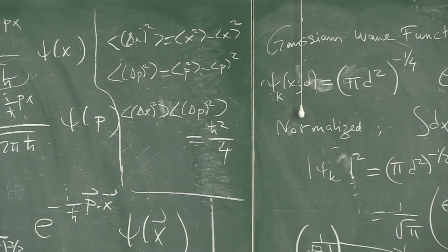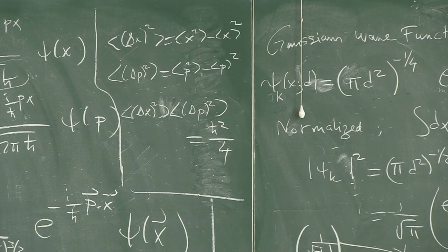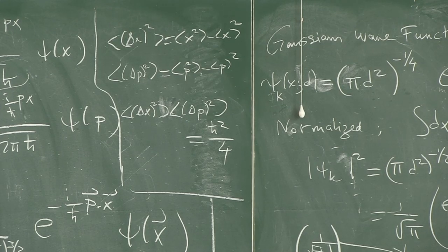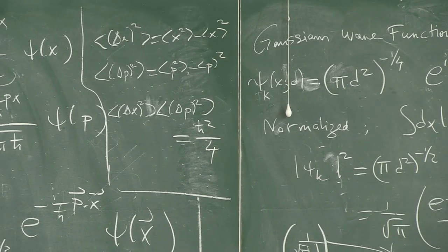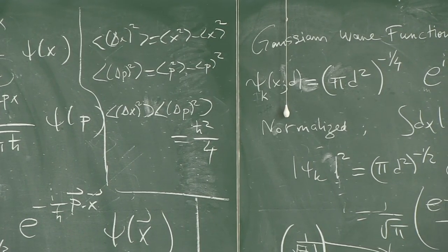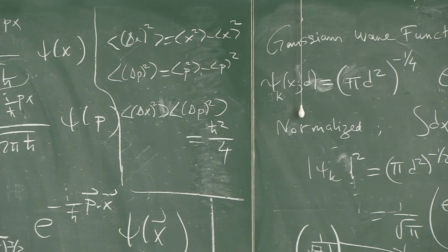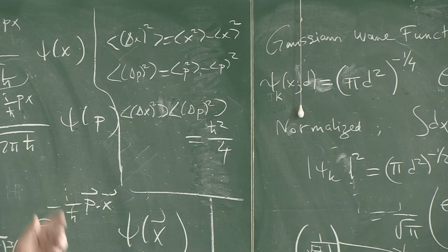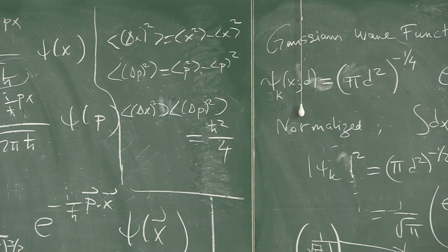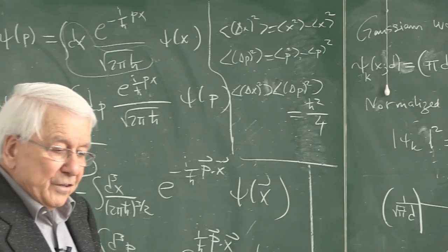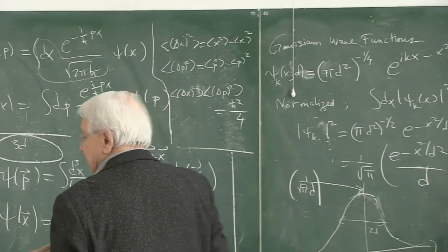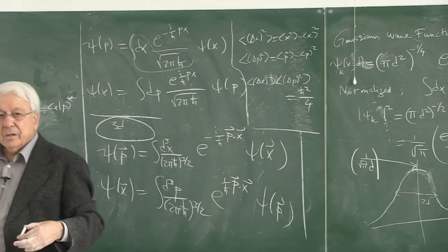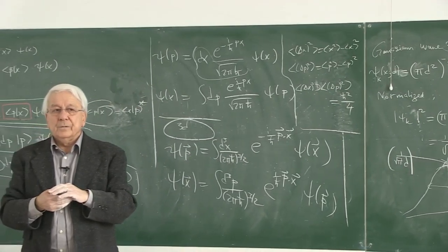These Gaussian states happen to be the coherent states. Coherent states are very important in quantum optics, and they are Gaussian — they are eigenstates of the operator λa† acting on the vacuum. That they have the minimum uncertainty is quite important. So you should have a strong feeling for this. Take it as an exercise and try to finish it by next week.